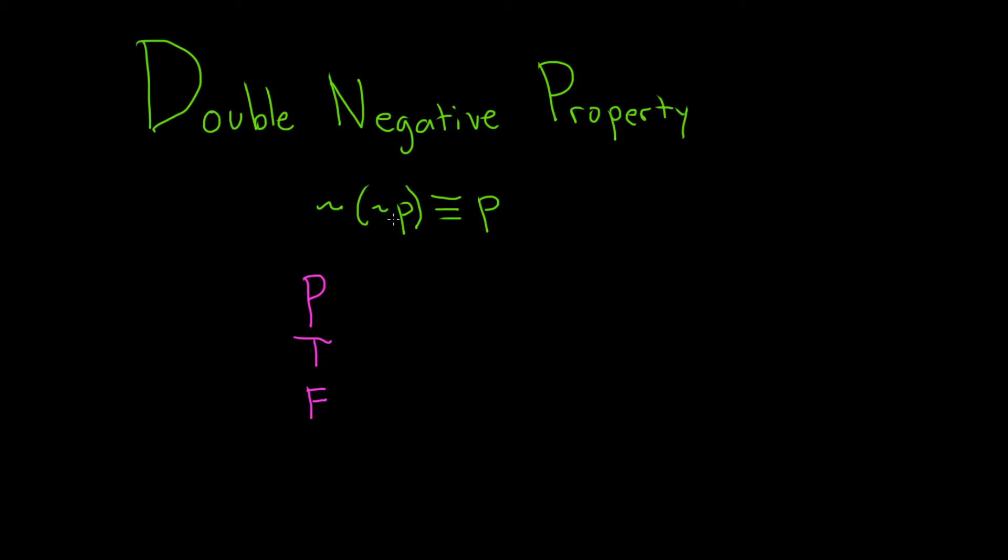Now we need to come up with the left-hand side. So we can start by looking at not P. So not P is the negation of P, so it has the opposite truth value. So here it'll become false, and here it'll become true.